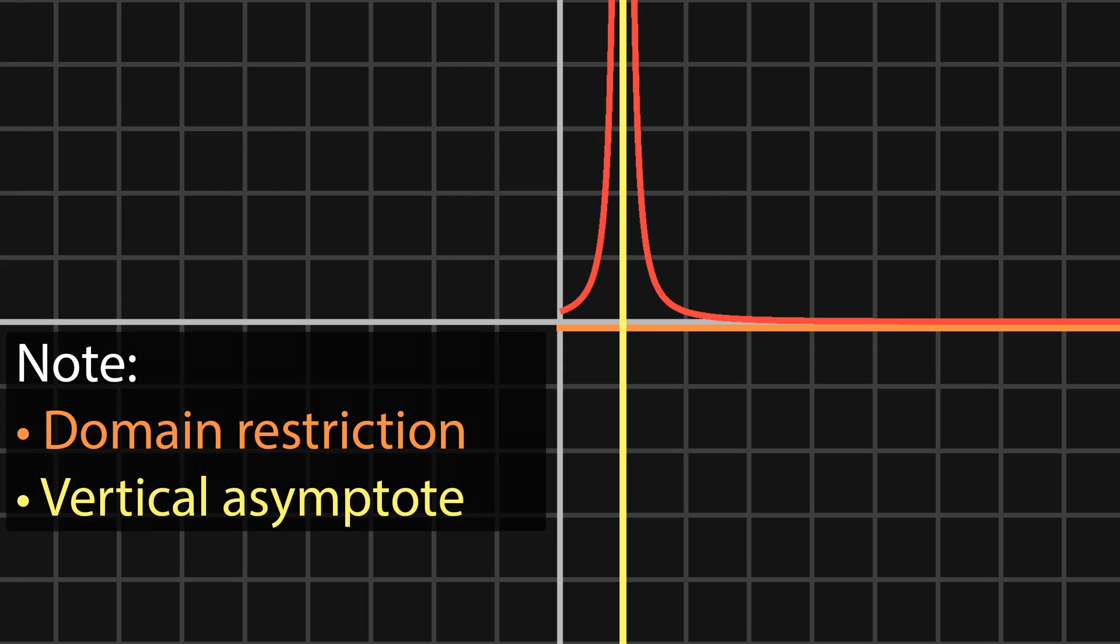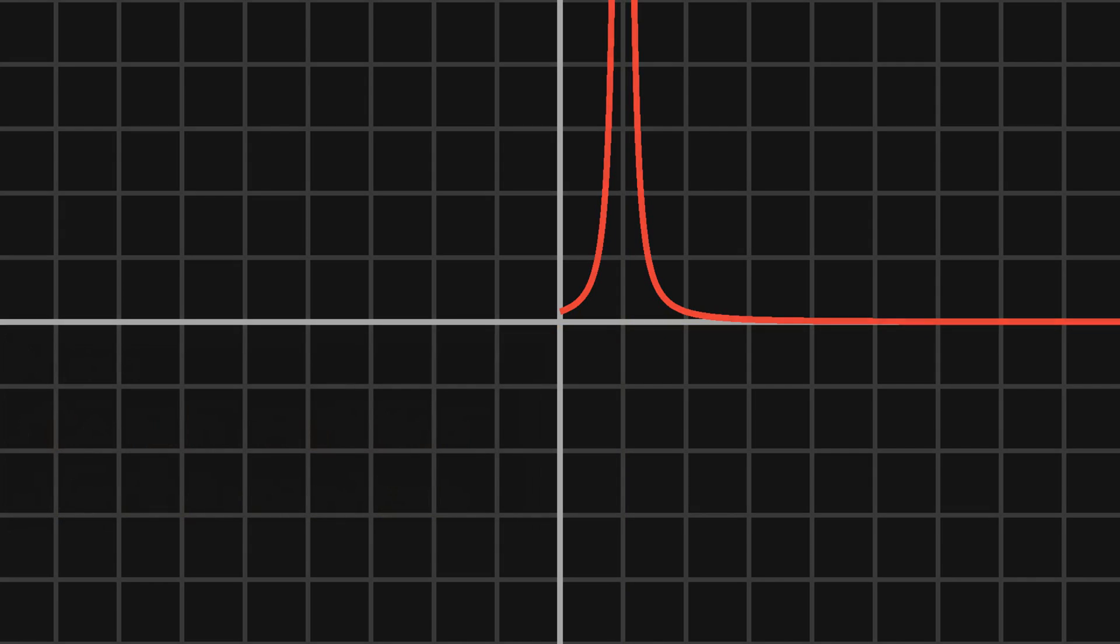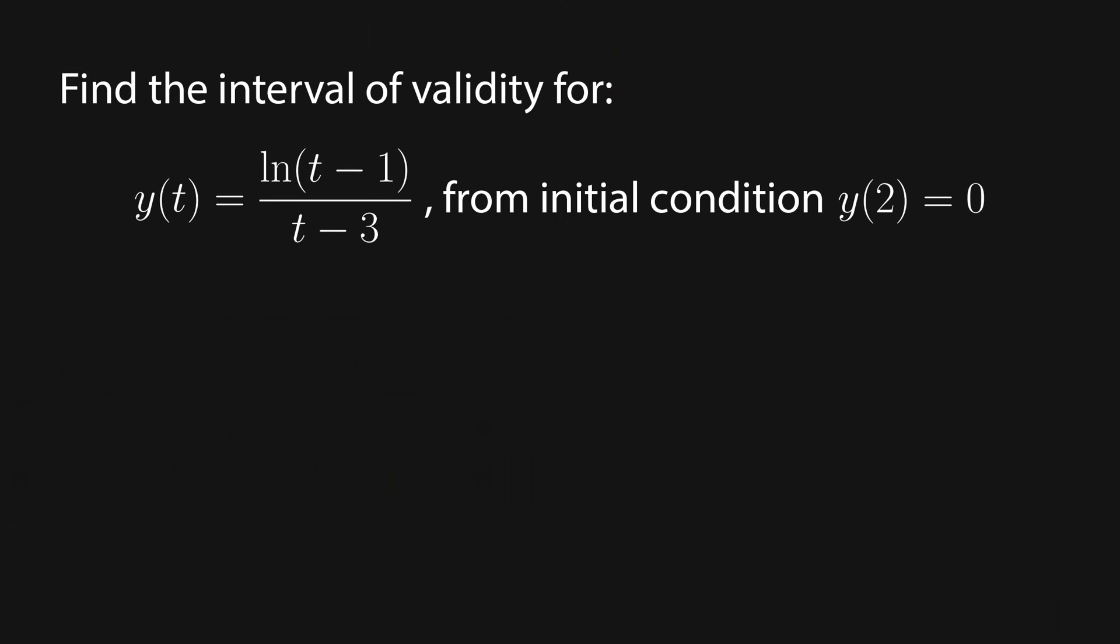First, we need to find all of our vertical asymptotes, points of discontinuity, and domain restrictions. Next, we need to see between which of these breaks our initial condition lies. We'll do plenty of examples with intervals of validity in the future, but I'll just do one here so that you get the gist of it.